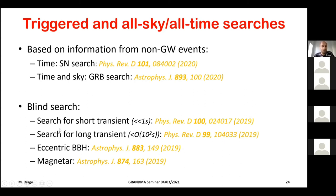You can also specialize your search with parameters according to what you expect. For example, you can search for short transients (less than one second), long transients (more than 100 seconds — seeming contradictory but legitimate), eccentric binary orbits where there aren't enough templates for matched filtering, or magnetars and other hypothetical sources.